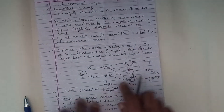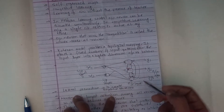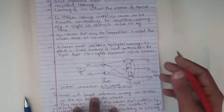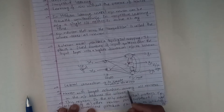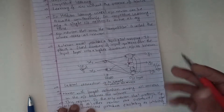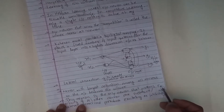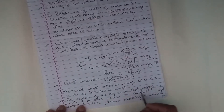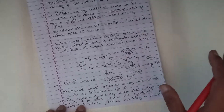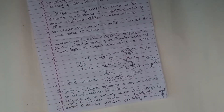To create competition between neurons, there are lateral connections. The neuron with the largest activation among all neurons becomes the winner. This neuron is the only neuron that produces output; the activity of all other neurons is suppressed. Lateral connections produce excitatory or inhibitory effects.